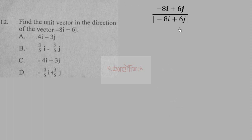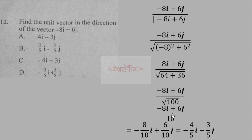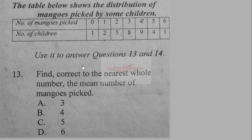The magnitude is √((-8)² + 6²) = √(64 + 36) = √100 = 10. Simplifying, we get −4/5 i + 3/5 j. So the correct answer is option D.